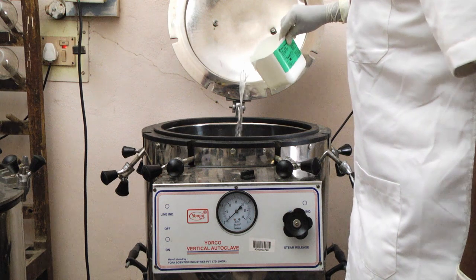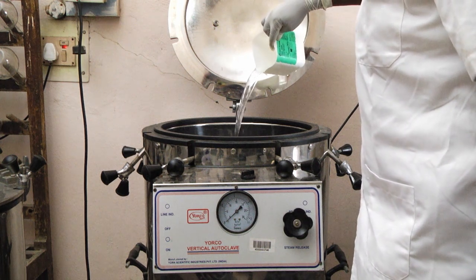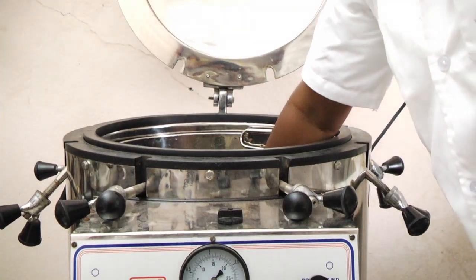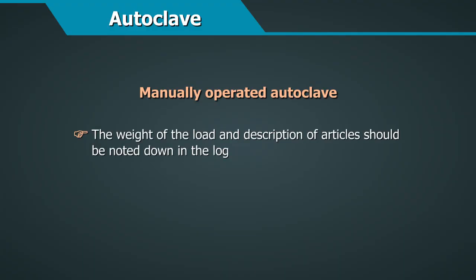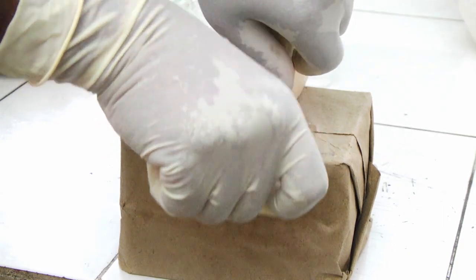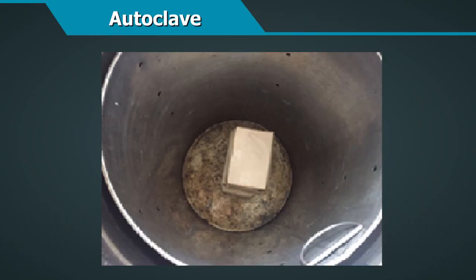When using a manually operated autoclave with thermometer and pressure gauge, add the correct amount of water as directed by the manufacturer. When loading, leave sufficient space between articles for steam to circulate freely. Do not allow articles to touch the sides of the chamber or stand in water — use a tray or wire stand at the bottom. Note the weight of the load and description of articles in the log, and place a control time-steam-temperature indicator strip in the centre of the load where steam penetration is likely to be slowest.